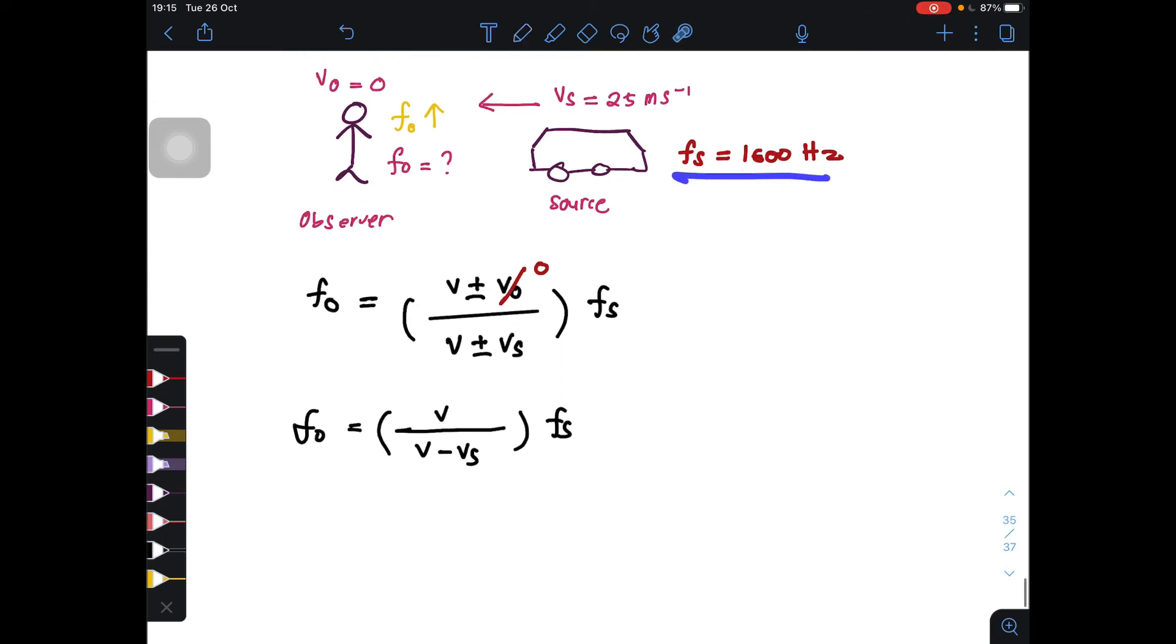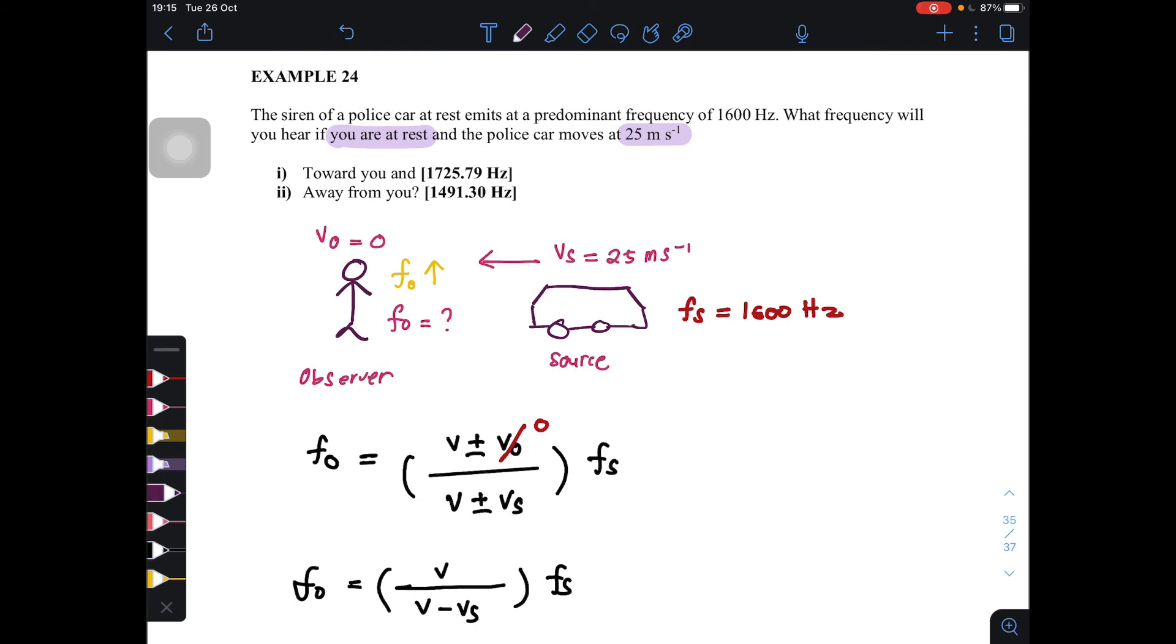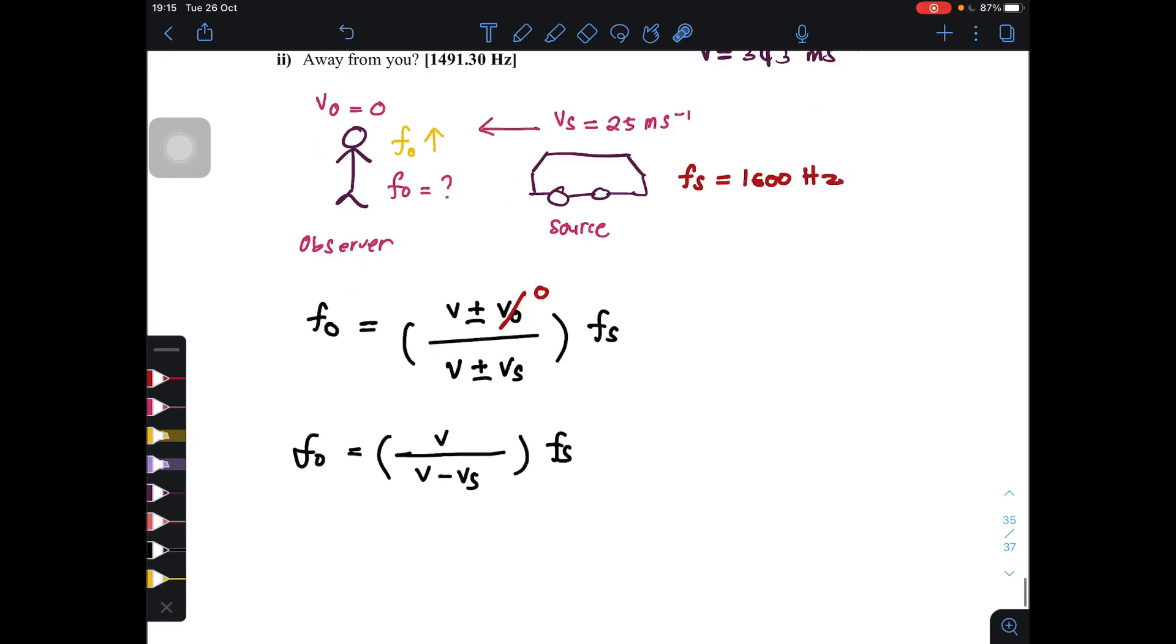And then, this one f_s. V we are not given, so if the question doesn't give you the value for V, we use this value 343 meters per second. And then,